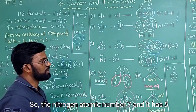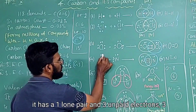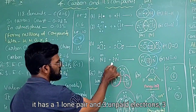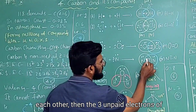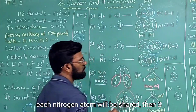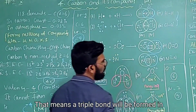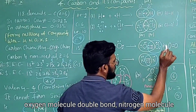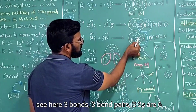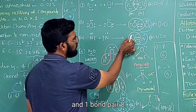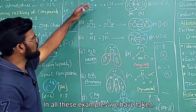For the nitrogen molecule, N₂: nitrogen has atomic number 7 and five valence electrons — one lone pair and three unpaired electrons. When two nitrogen atoms come close, the three unpaired electrons of each atom are shared, forming three covalent bonds — a triple bond. Each nitrogen atom has one lone pair and three bond pairs: three twos are six plus two gives eight electrons, achieving octet configuration. So nitrogen molecule is also stable.